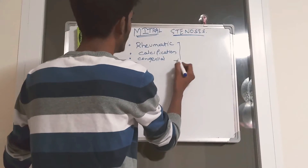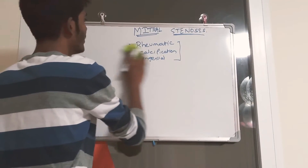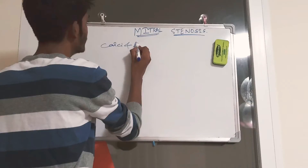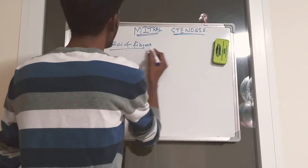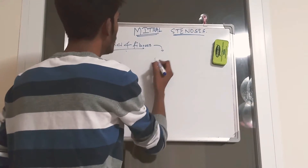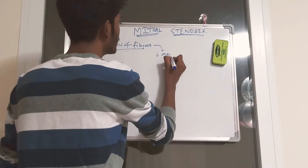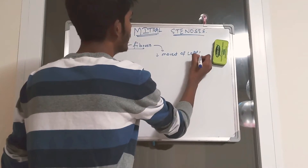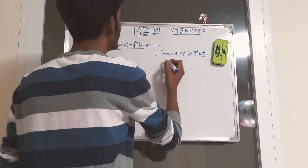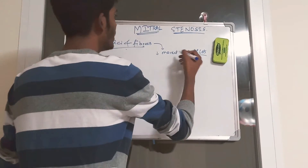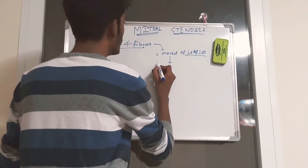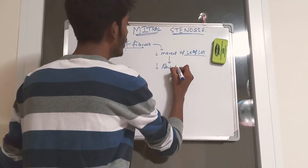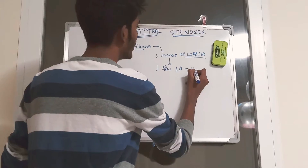When you take any of these abnormalities — calcification and fibrosis — what happens? These cause decreased movement of the valve leaflets. Leaflets are nothing but the two cusps of the valve. When there is decreased movement of these leaflets, the space is narrowed.